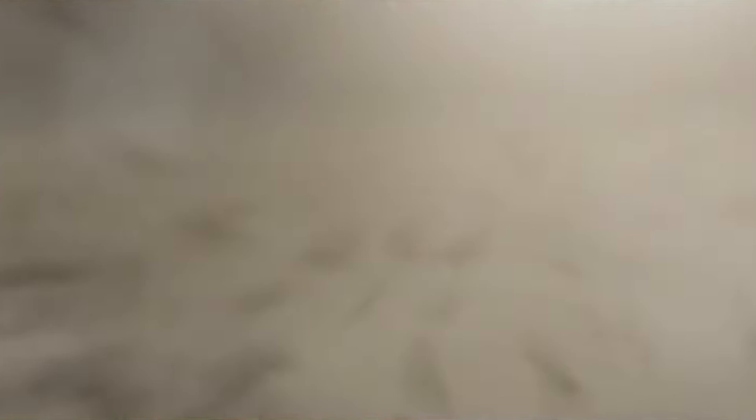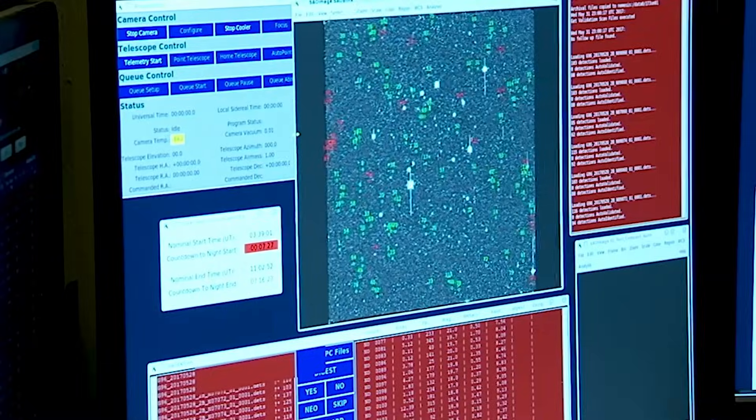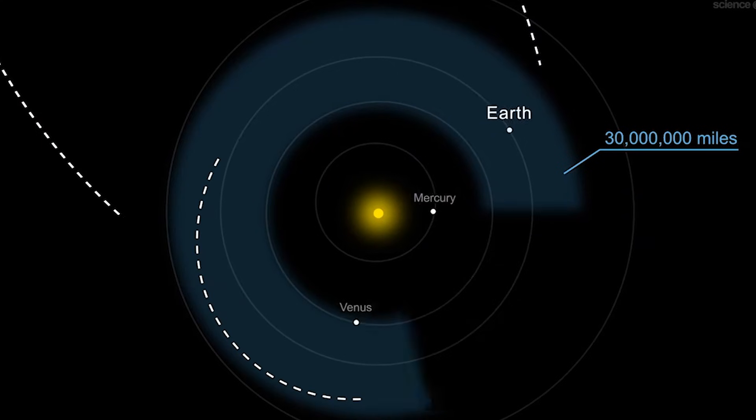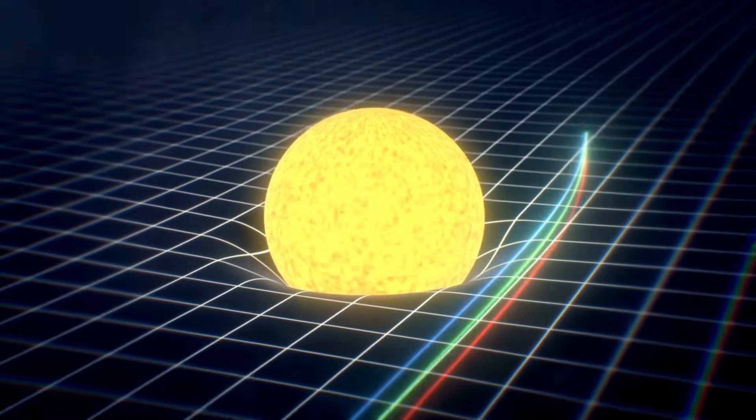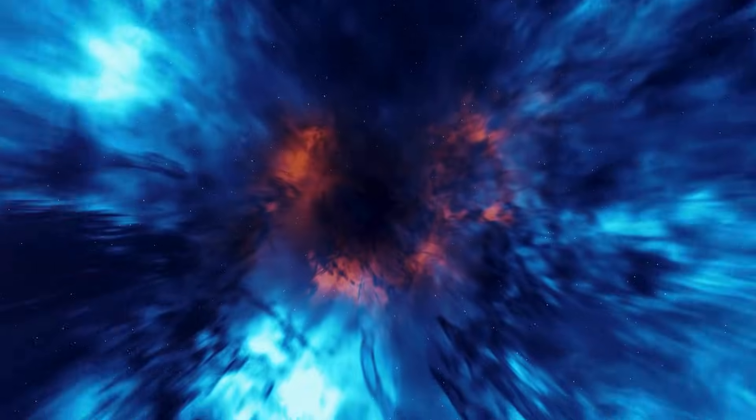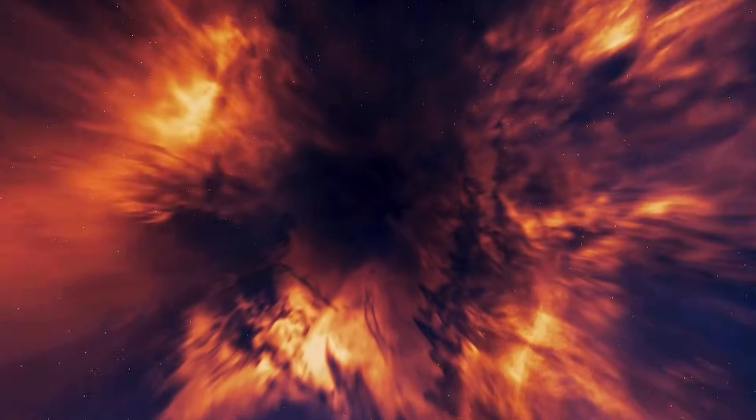But before you start panicking, remember that science, as bizarre as it may sometimes be, is our greatest ally. There are entire teams of specialists deeply studying all the variables. However, this combination of factors, from the sun's radiation to gravitational fields, continues to keep us in a constant state of alert. And this leads us to an intriguing question: are we truly capable of controlling our destiny in the vast, unpredictable, and chaotic universe?